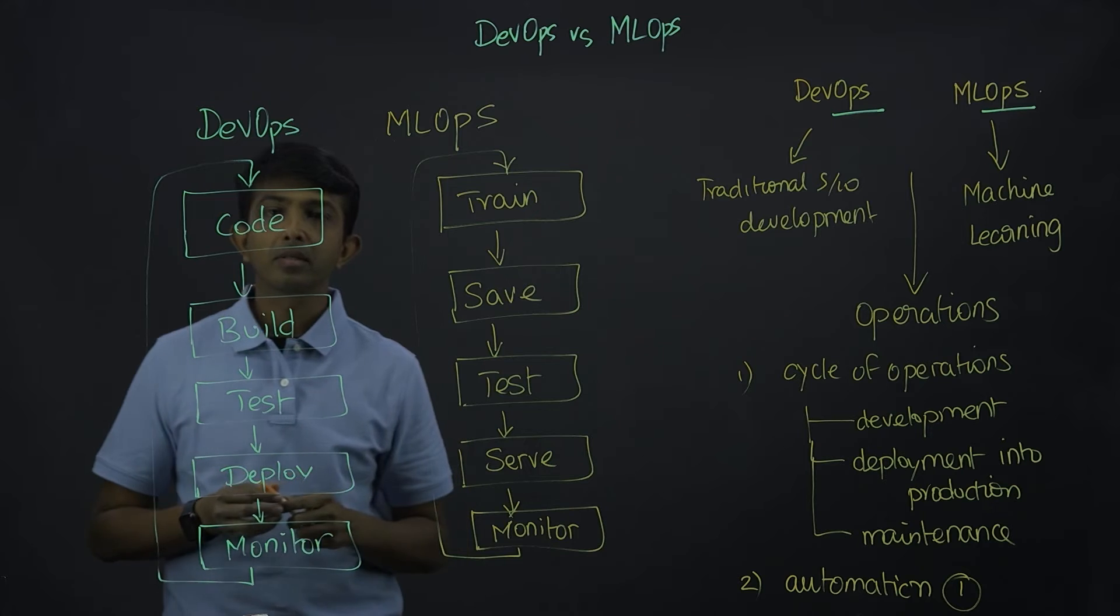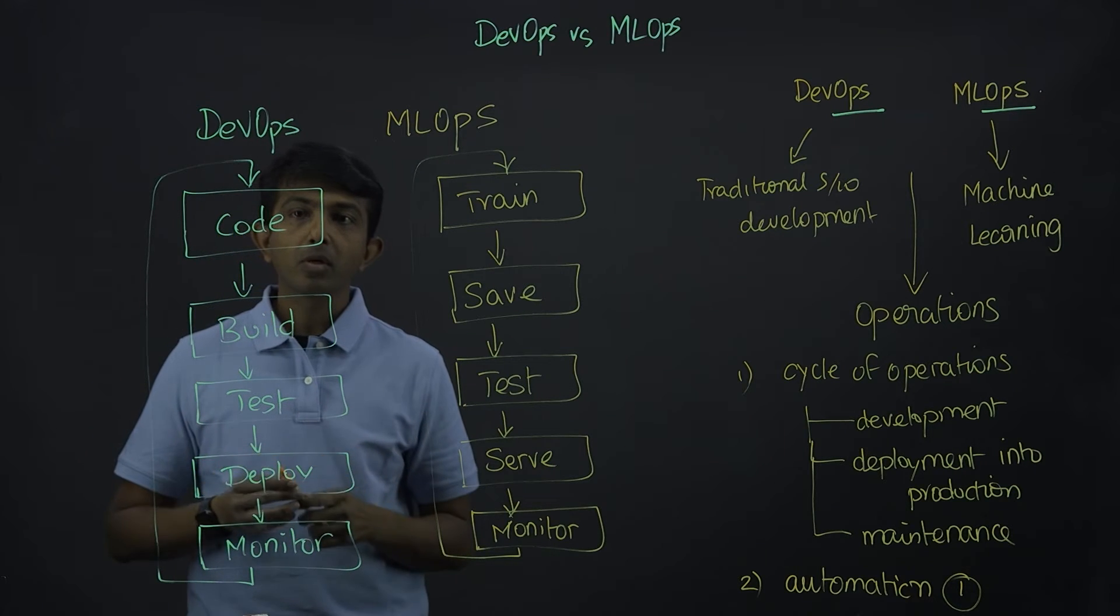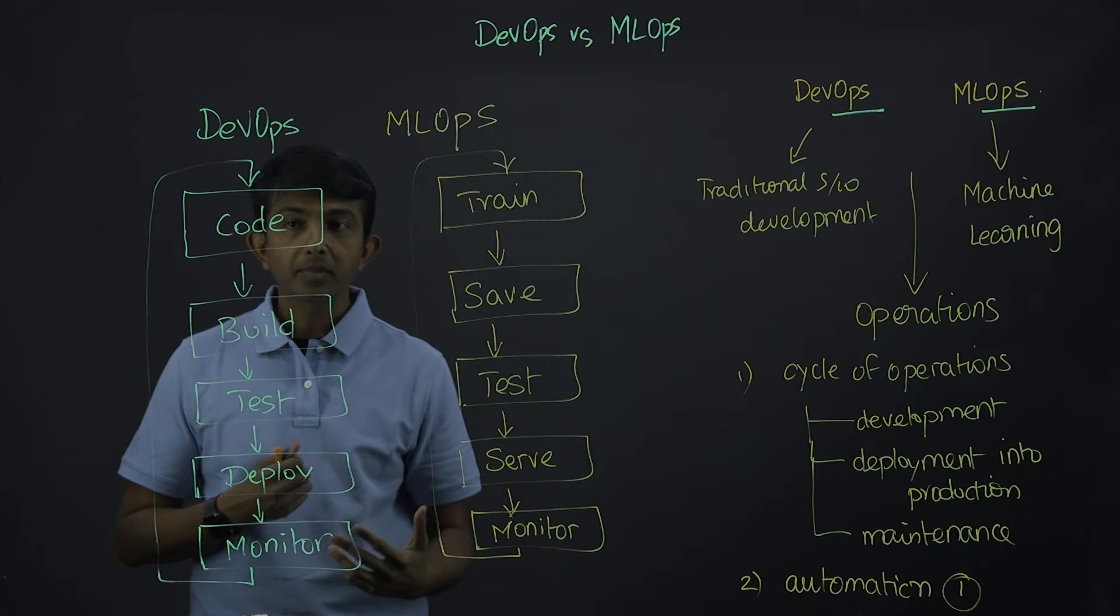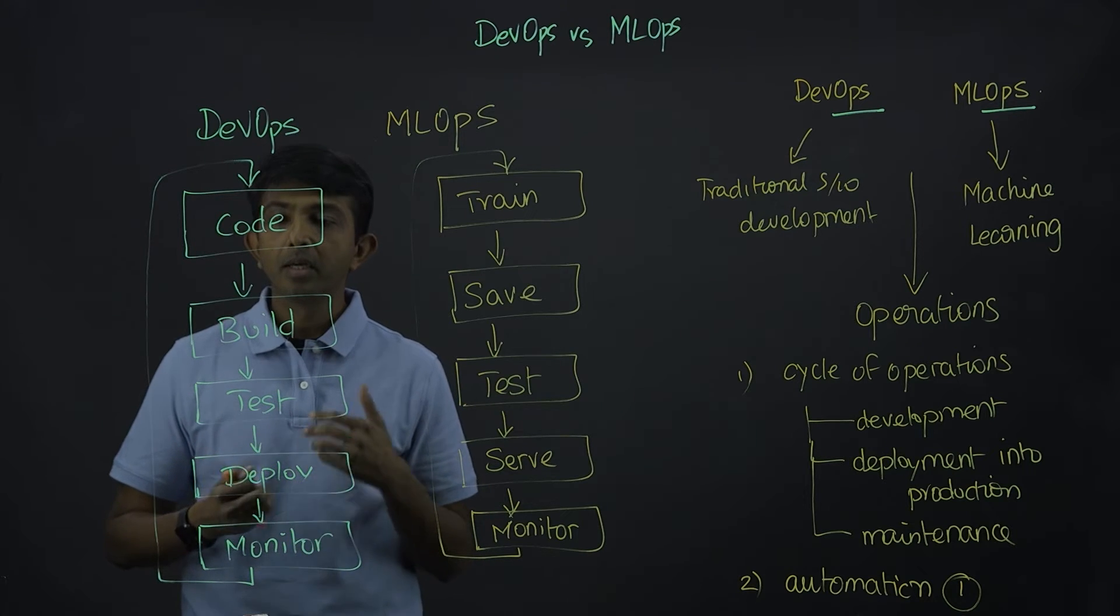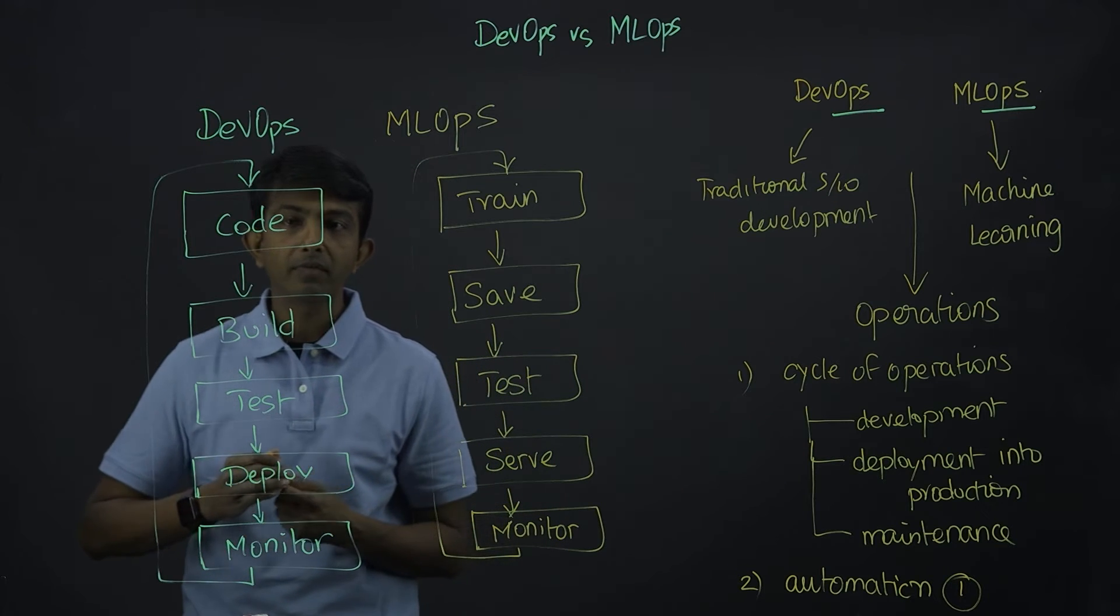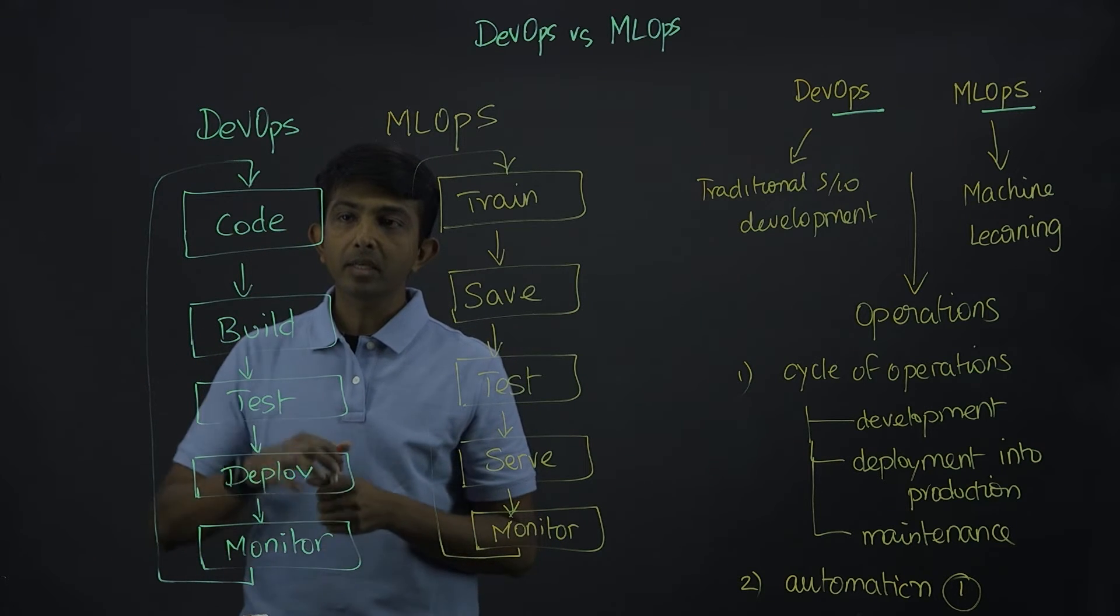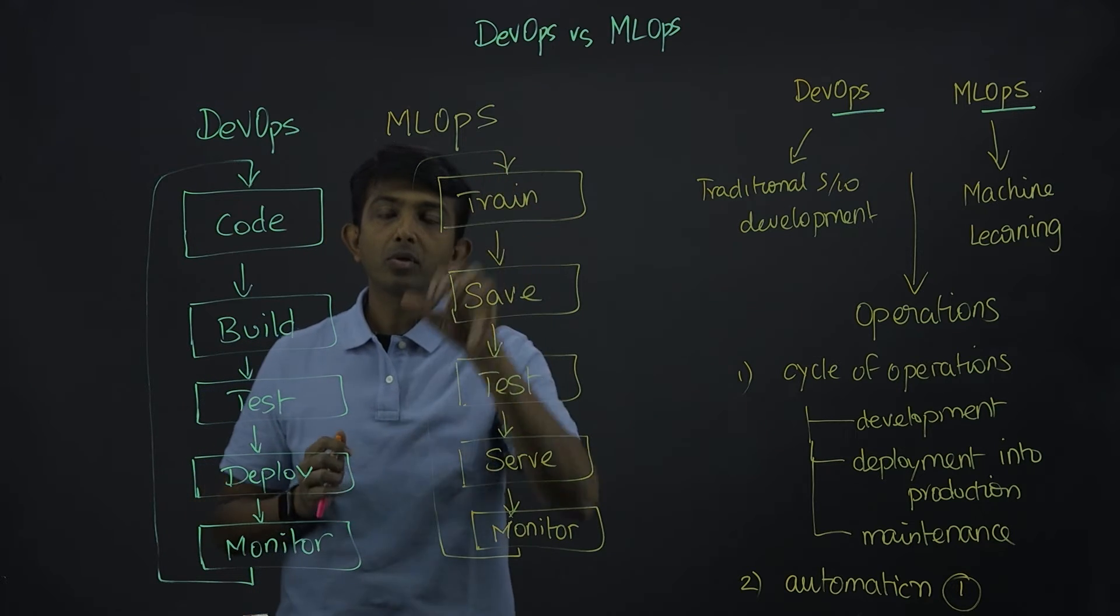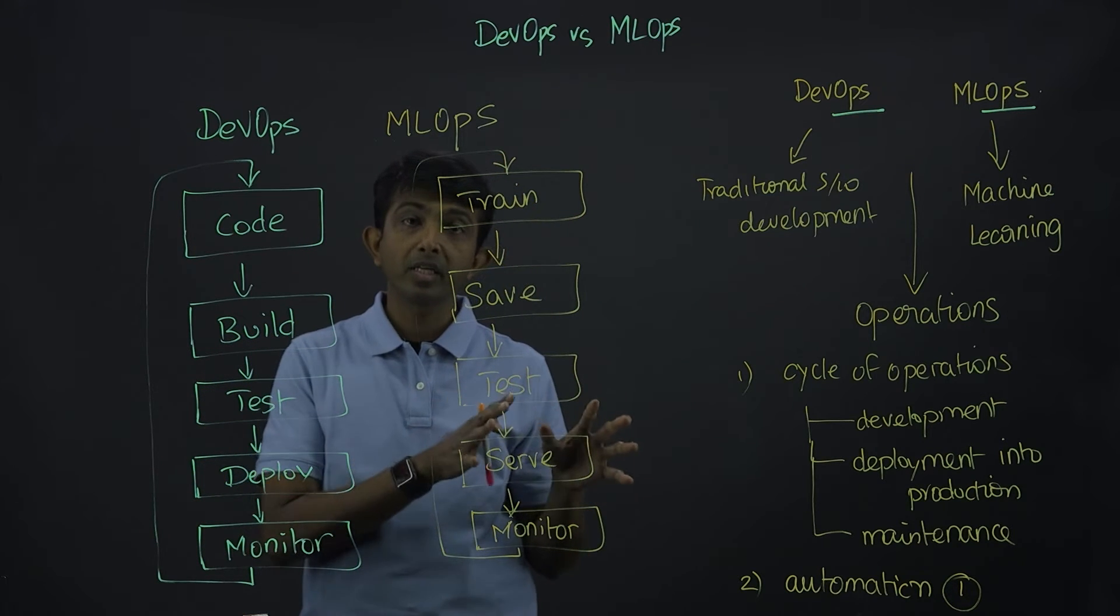Let me explain different phases. Code is where you develop the code. It looks like one single step, but typically, you develop the code, optimize the code, test the code, and it goes into an iterative process. And once that is done, you build the release artifacts. It's just like how you develop code with traditional software applications.